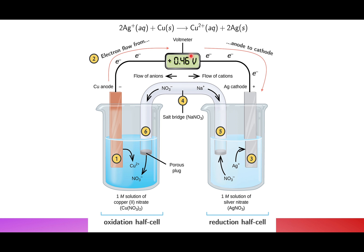The only way this flow of electrons can occur is if the circuit is closed. The only way to close the circuit without interfering with the reaction is to create a pathway for charge to flow that doesn't allow the solutions to overlap — and this is what we use the salt bridge for. The nitrate ions can move through the salt bridge.